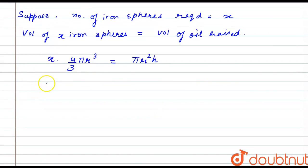So now we have the value for the radius of the spheres as 1.5 or 3 by 2, whole cube, is equal to pi into radius of the jar is 6, so it is 6 square, into the height that it is raised is 2.